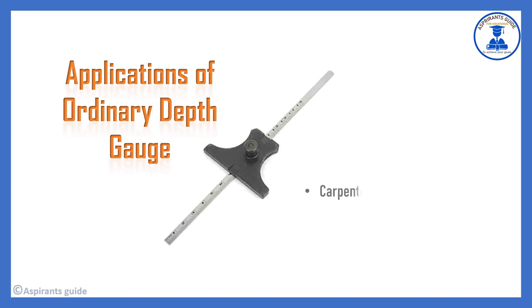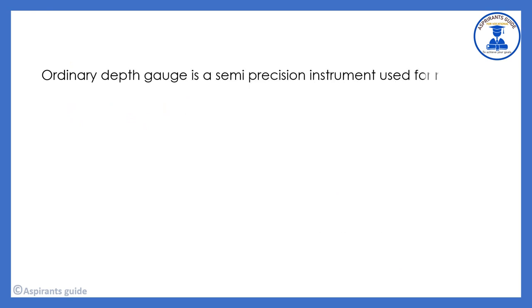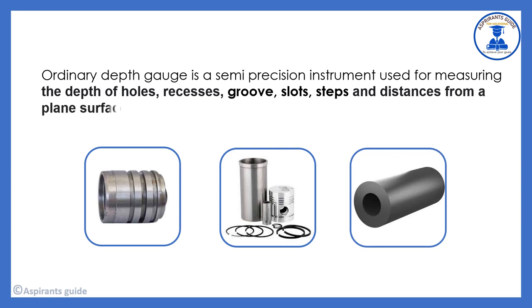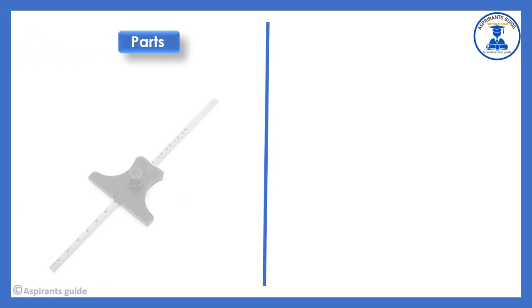Let us know the applications of the ordinary depth gauge. Now you can see the image of the ordinary depth gauge here. It is mostly used in carpenter works, machine works, and engineering and manufacturing fields. The ordinary depth gauge is a semi-precision instrument used for measuring the depths of holes, recesses, grooves, slots, steps, and distances from a plane surface to a projection, by machinists, mechanical engineers, and manufacturing engineers.